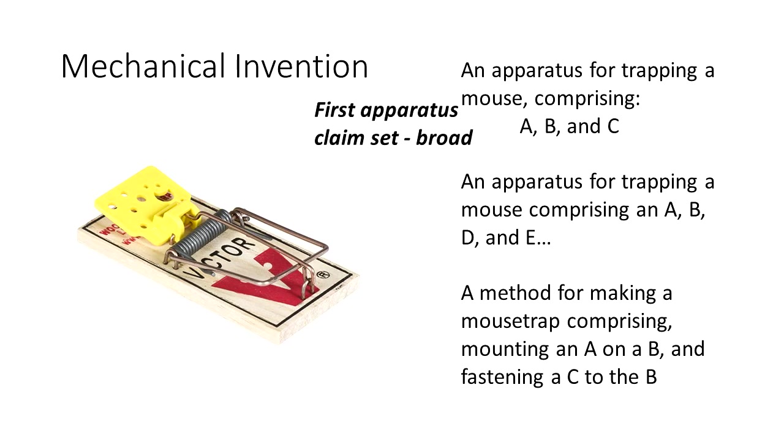So then we have two apparatus claim sets. The first is a more broad claim set starting with just elements A, B, and C, and the second set is more detailed, having A, B, D, and E. So more things in that second claim set to start with.